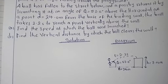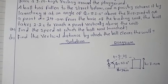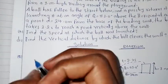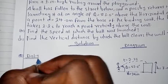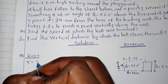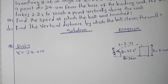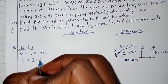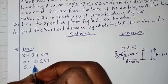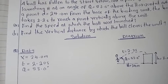So now they want us to find the speed at which the ball was launched. The first thing we'll have to do is align the data for part A. What do we have? We have the range of 24 meters, the time of flight of 2.20 seconds, and the angle of 53.0 degrees.